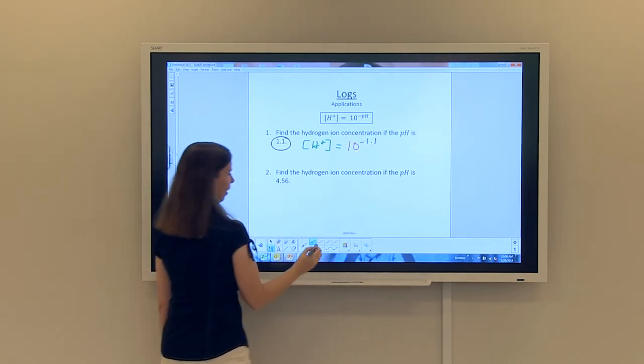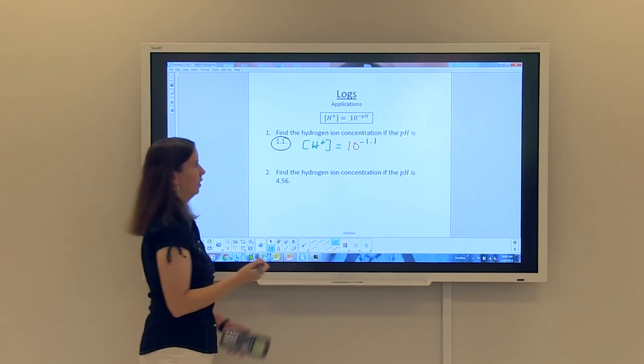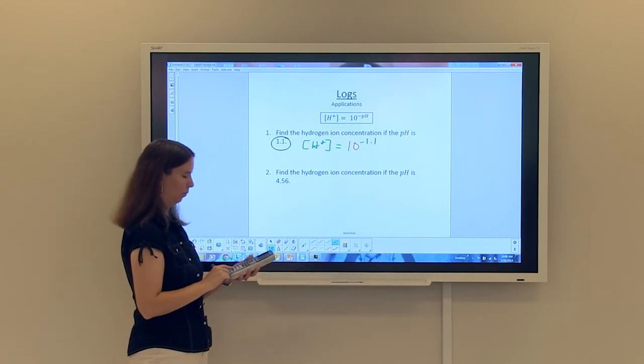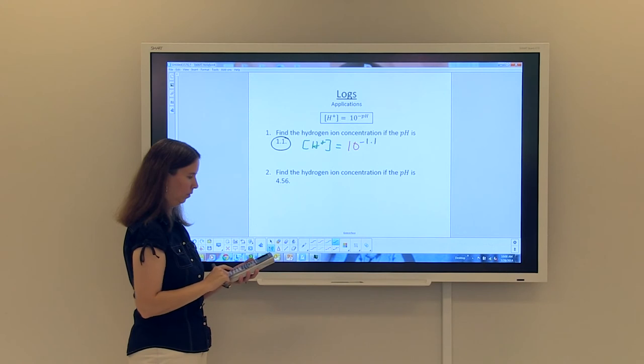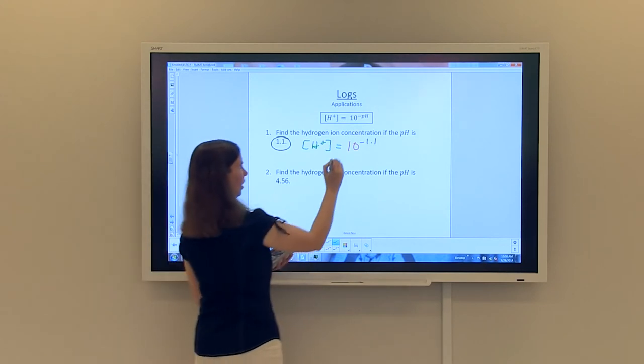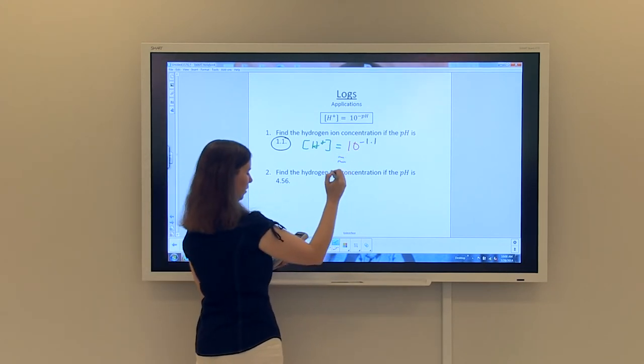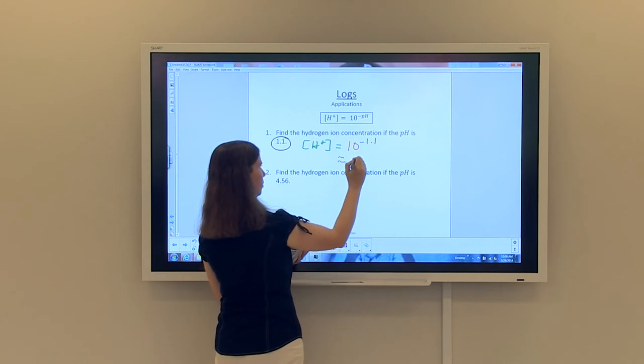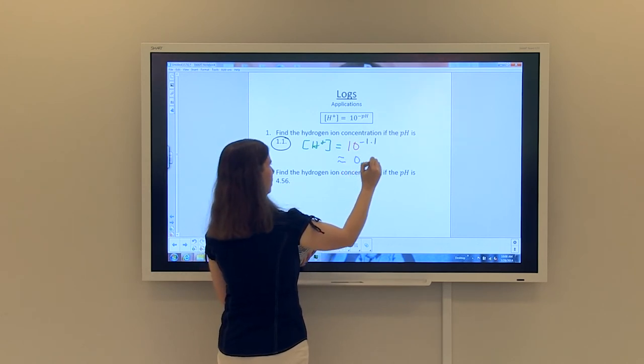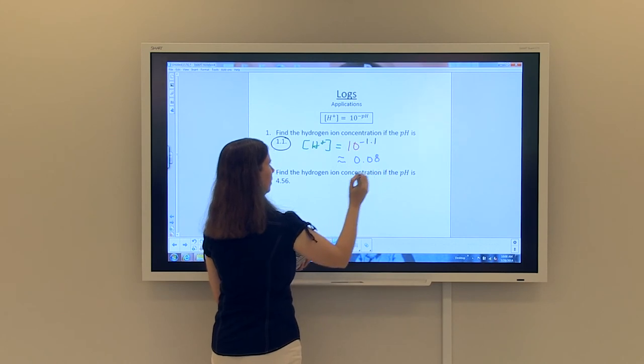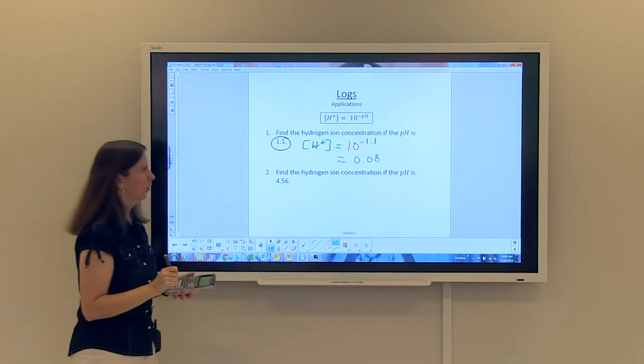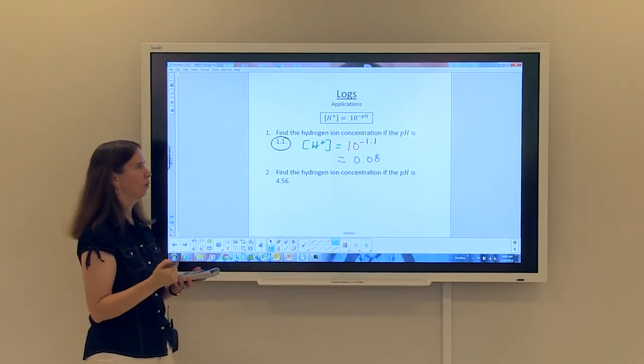So I simply have to substitute or plug into my calculator, 10 to the negative 1.1. And taking that to two decimal places, that will give me approximately 0.08. So the hydrogen ion concentration, 0.08 molars.